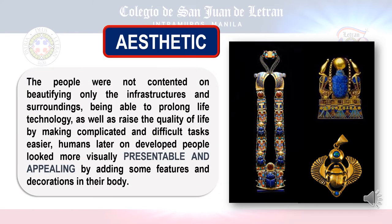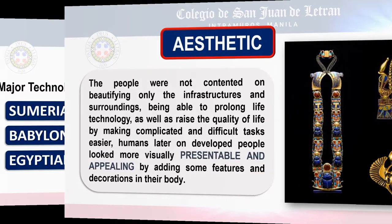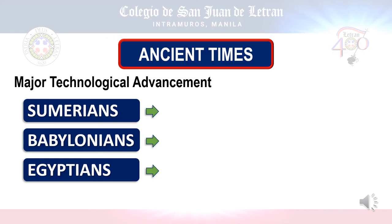People were not contented with only beautifying infrastructures and their surroundings. They made it more complicated by adding decorations to their bodies to appear presentable and appealing, and this is called aesthetic. We are now done with the problems encountered during ancient times. Let's proceed to the major technological contributions made by Sumerians, Babylonians, and Egyptians.